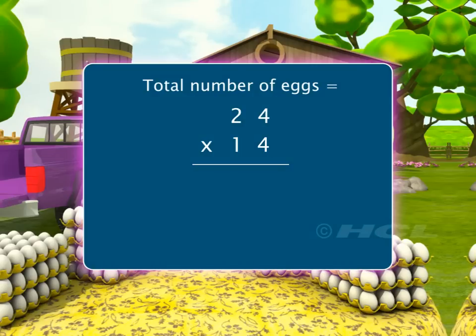We always start multiplying by the digit at the ones place. Multiplying 24 by 4, we get 96.